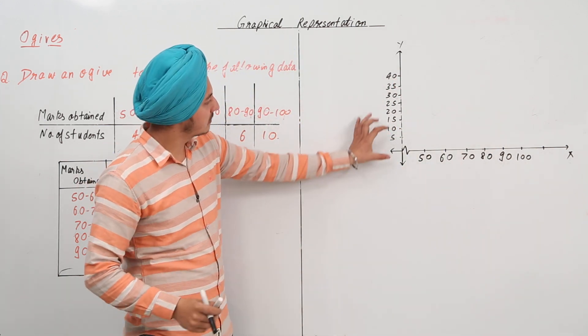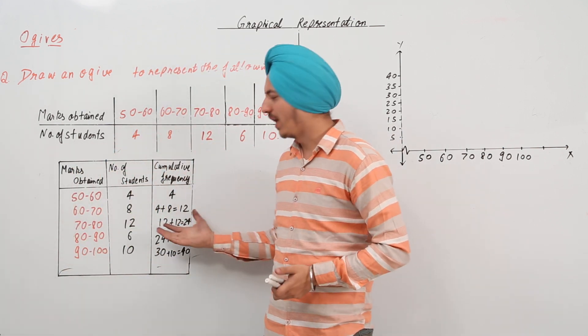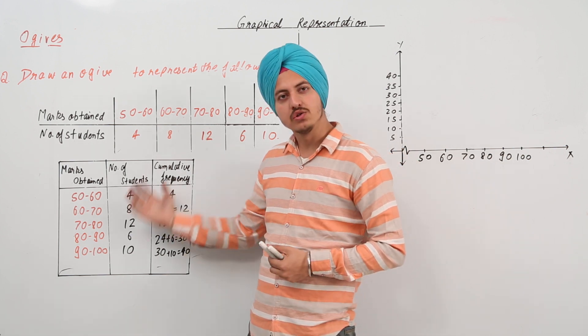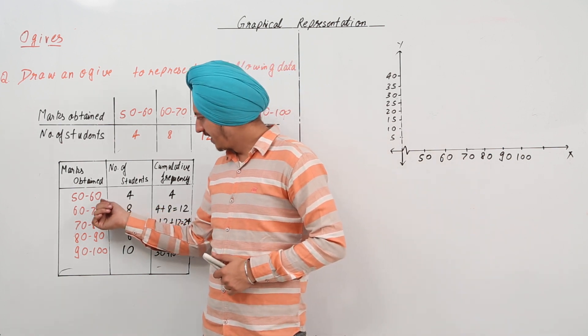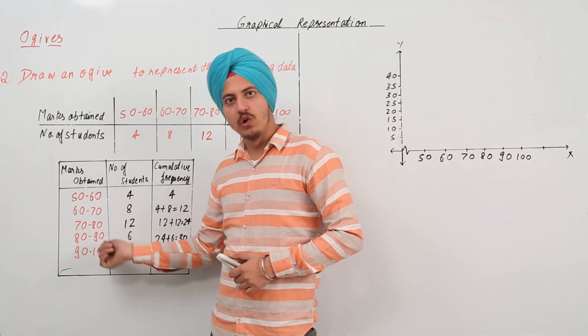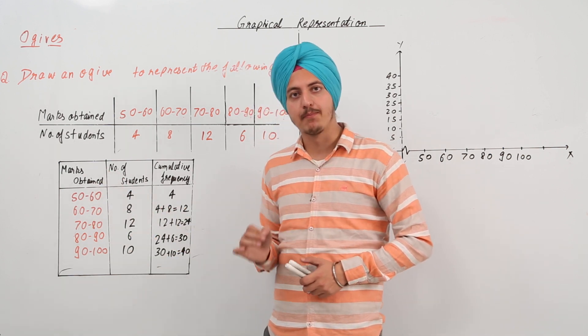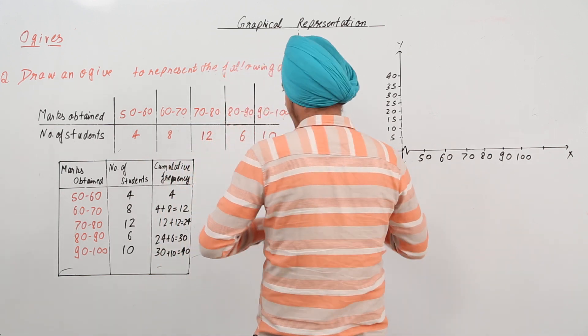So, now this much is equal to 5. So, now all we have to do is just mark these values. How do we mark values on an ogive? For that we have to see the upper limit of all the class intervals. We have to see the upper limit only and we mark these points.